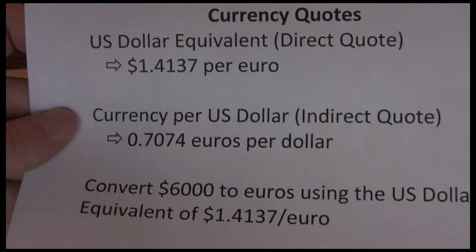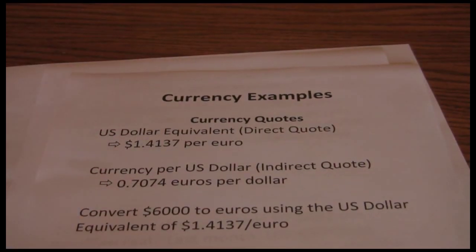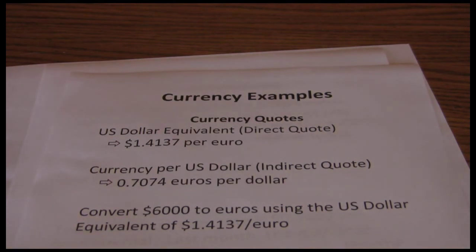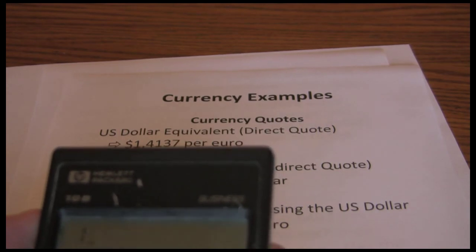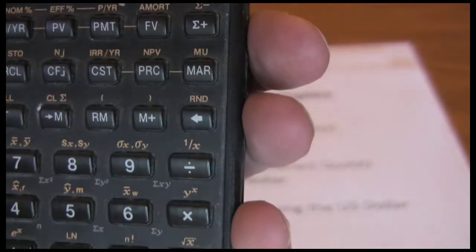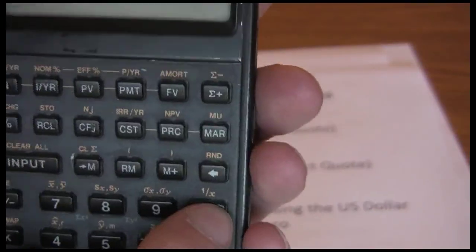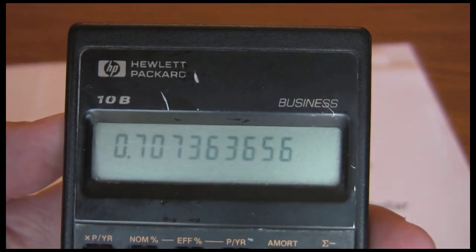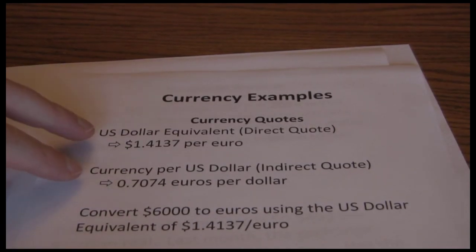These are two different ways to present the currency information, but they're not two different exchange rates — they're the same exchange rate. For example, using my financial calculator, I start with the U.S. dollar equivalent, 1.4137, and I invert it using the one-over-X key. My answer is 0.7074 — the same as the currency per U.S. dollar. So these two currency quotes are just providing the same information.